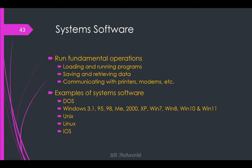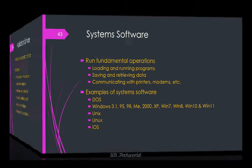After DOS, graphical user interfaces came. We moved through Windows 3.1, 95, 98, ME, 2000, Windows XP, Windows 7, Windows 8, Windows 10, and nowadays Windows 11. These are graphical user interfaces. We use a mouse or touch screen to operate the computer. Unix, Linux, iOS, and other operating systems are also available.